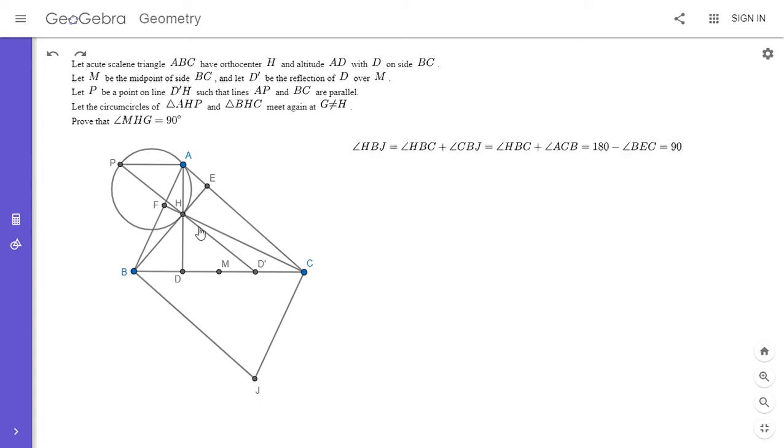I'm going to do a little angle chase here. We have angle HBJ equals angle HBC plus angle CBJ. CBJ is an alternate interior angle with ACB, so this is angle HBC plus angle ACB. But those are two of the three angles in triangle BEC, so they have to add up to 180 minus the third angle.